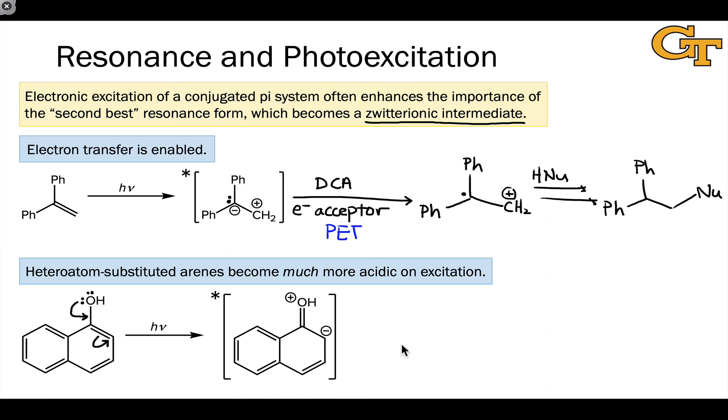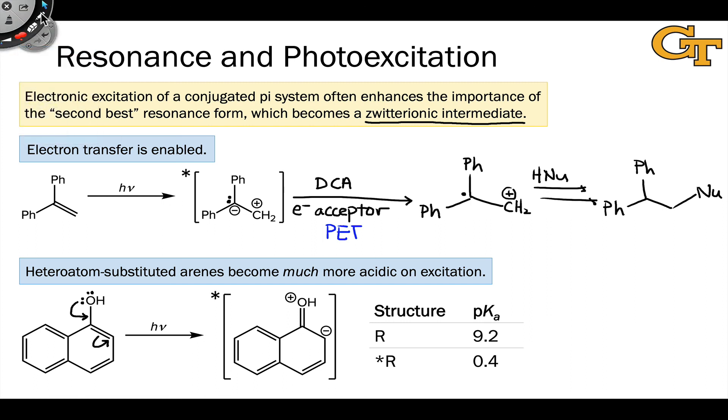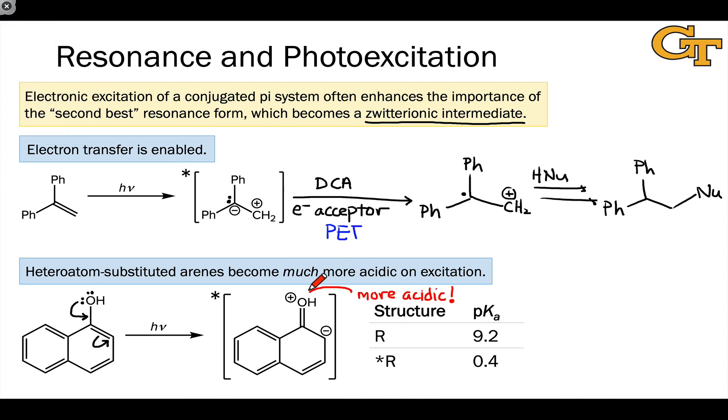And this isn't just pushing electrons on paper. We have empirical evidence for this in the form of the pKa's of 2-naphthol and its excited state. And you can see the pKa of the excited 2-naphthol has plummeted. This has become much, much more acidic as a result of photoexcitation. We can trace this effect to the fact that this resonance form with opposite charges and with electron density pushed into the naphthalene ring gains an importance dramatically upon photoexcitation.